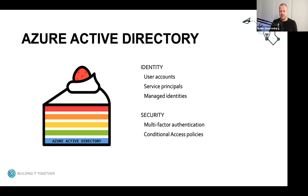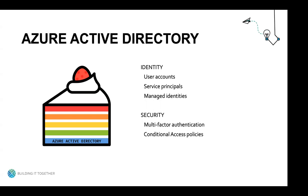Service principals allow applications and automation tools to access and work with resources within Azure. Authentication is handled by a combination of the application identifier — the app ID — and a secret key or certificate, where the certificate is a better authentication mechanism. The last identity type is managed identities. They provide an identity for resources within Azure and can be used, for example, to access other resources like secret keys inside an Azure Key Vault, which we will look at in the demo.